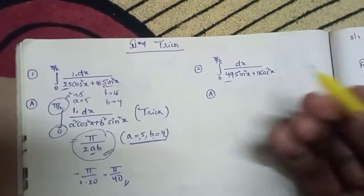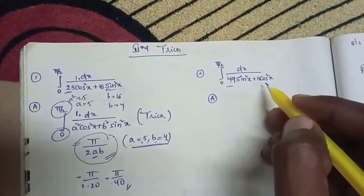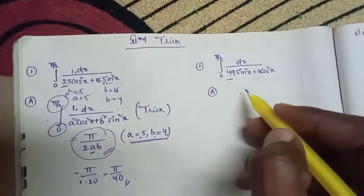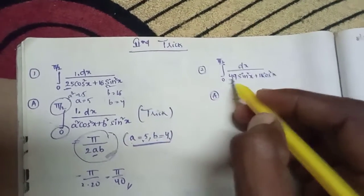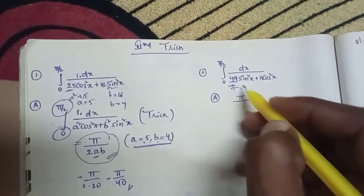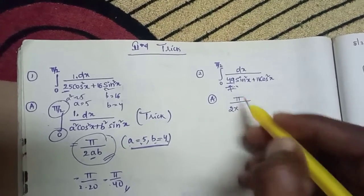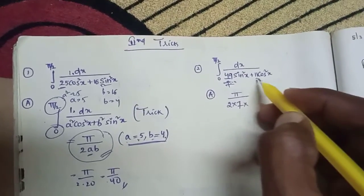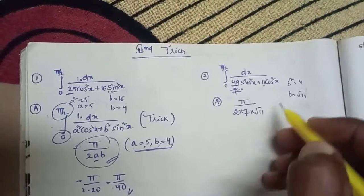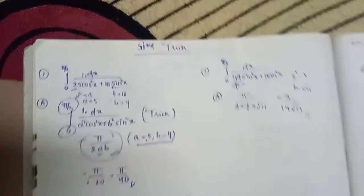Next, for an indefinite integral involving roots: a² is equal to 7, so 2 into a² is 14. And b² is equal to 11, so b is equal to root 11. Applying the formula, the answer is π divided by 14 root 11. This is the answer.